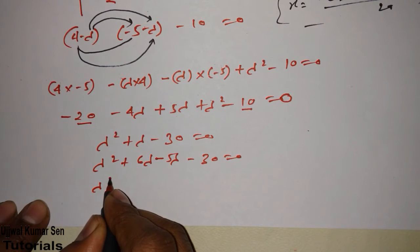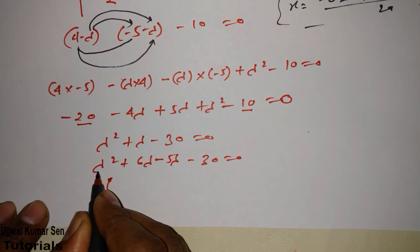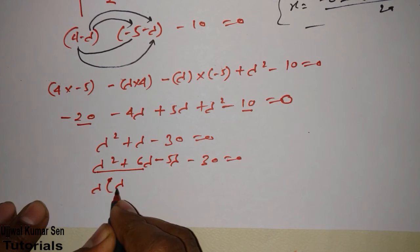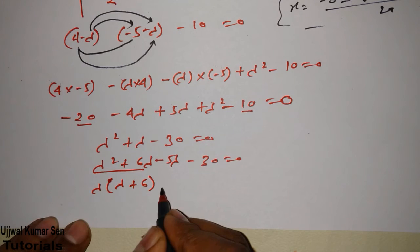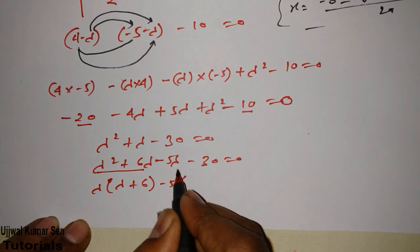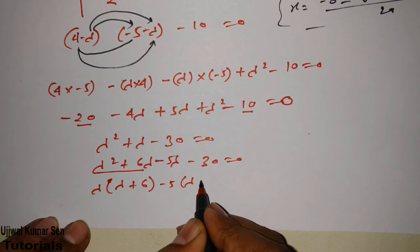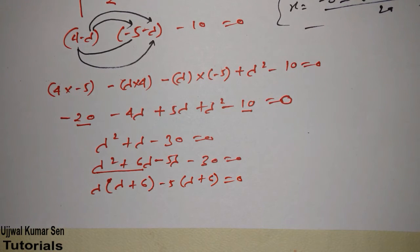Let's take common lambda from these two values. So remaining would be lambda here, 6. Let's take common minus 5 from here, so minus 5 times lambda would be remaining, minus minus plus, therefore 6 would be remaining, equal to zero.